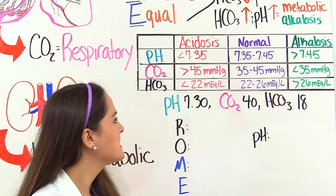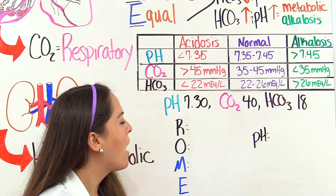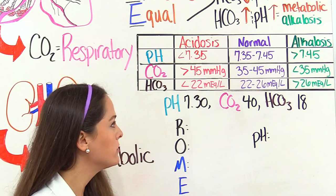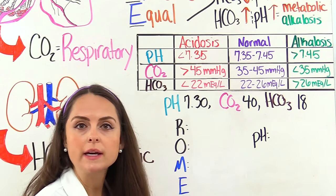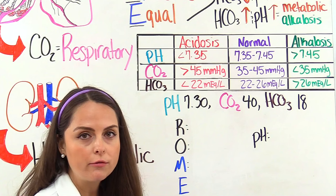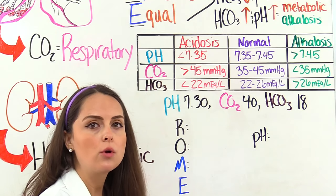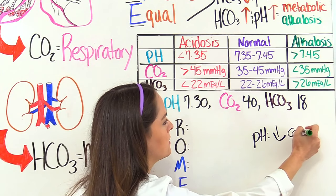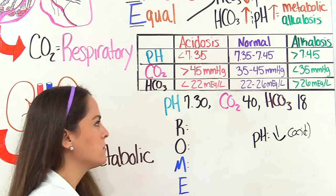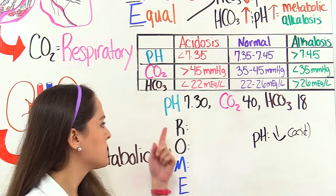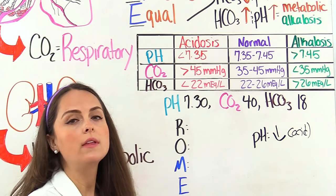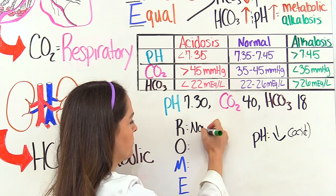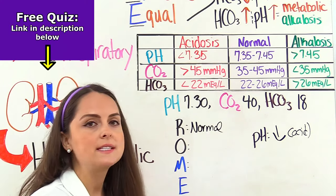Our next problem: blood pH of 7.30, CO2 of 40, bicarb of 18. Blood pH normal is 7.35 to 7.45 — we're at 7.30, so we're on the acidotic side. Respiratory CO2 is 40, normal is 35 to 45, so we're actually normal there.